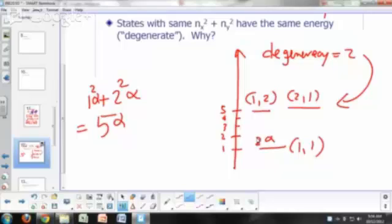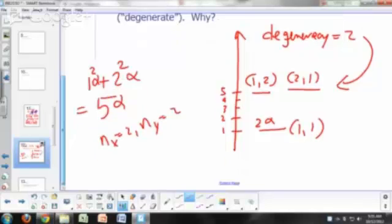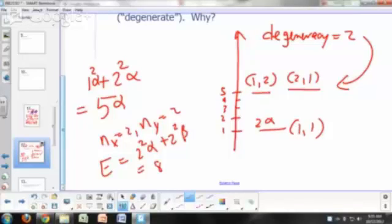So what would be your next allowed energy level? 1, 3, 3, 1, or 2, 2? Let's see. N sub x equals 2, n sub y equals 2. What would that be? Energy would be 8 alpha. So 2 squared alpha plus 2 squared beta. That's going to be 8 alpha since alpha and beta are the same. So that's just a degeneracy of 1. So you say your second excited state has a degeneracy of 1, or we say it's non-degenerate.